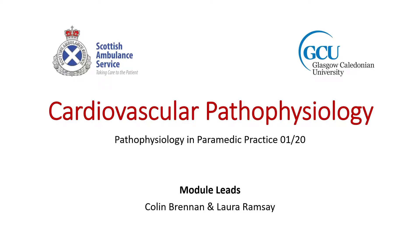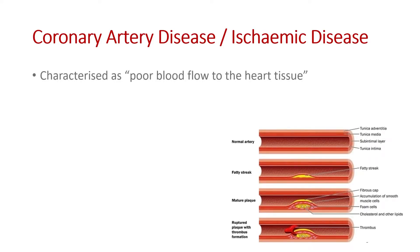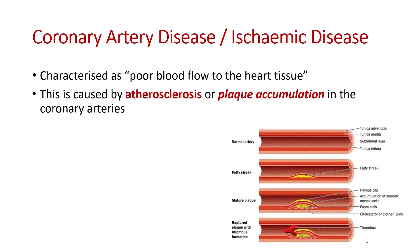We'll start our overview of cardiovascular pathophysiology by thinking about the most common presentations. Probably the most common is coronary artery disease or ischemic heart disease. Ischemia is poor blood flow — specifically poor blood flow to the musculature of the heart — and this is caused by plaque accumulation or atherosclerosis. Atheroma, meaning 'gruel' in Greek, is this build-up of fatty tissue, white blood cells, and other material forming plaque outside the tunica intima.